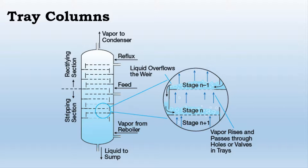However, instead of using packed material, they use trays situated at various heights within the tower, also known as stages. There are three main types of trays in use: sieve, valve, and bubble cap trays.